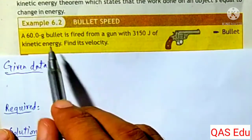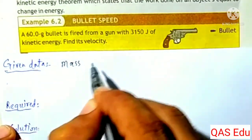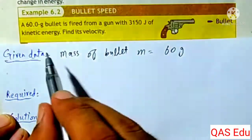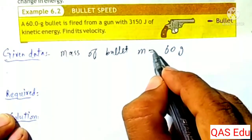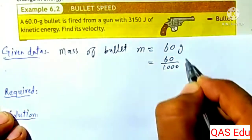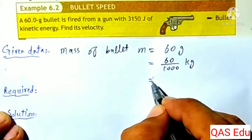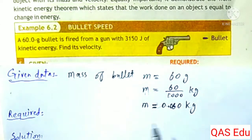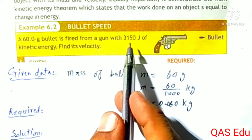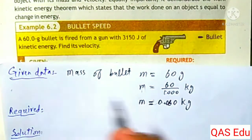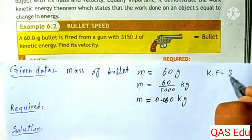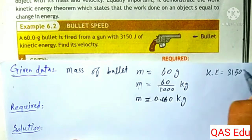Example 6.2: A 60-gram bullet. The mass of the bullet is given as 60 grams. Converting to kilograms by dividing by 1,000 gives 0.060 kg. The kinetic energy given is 3,150 joules.